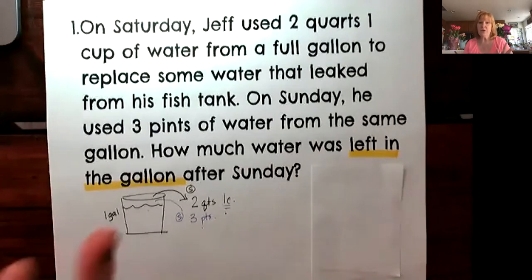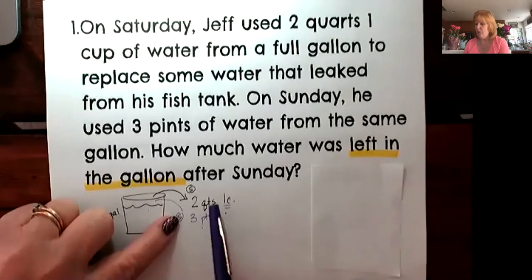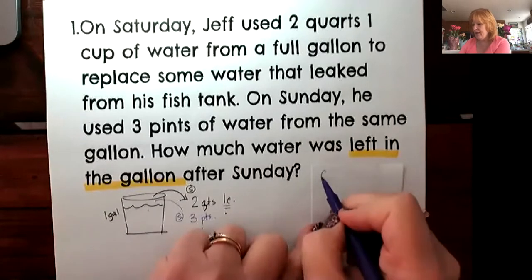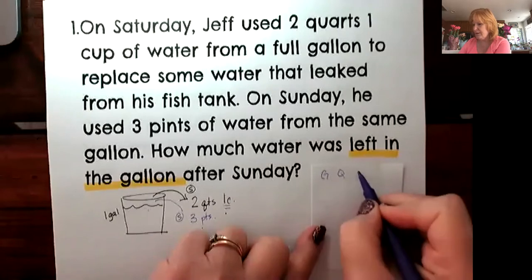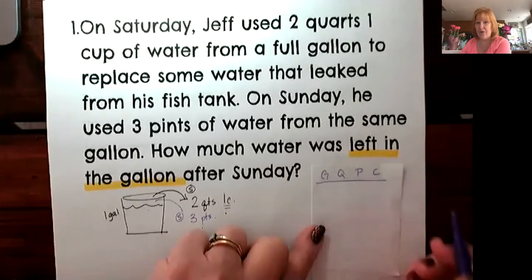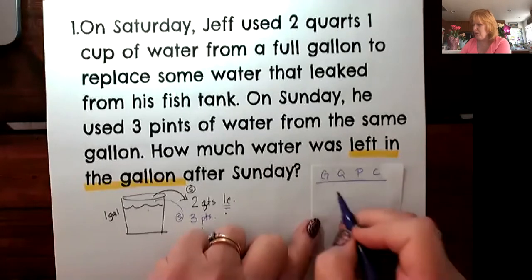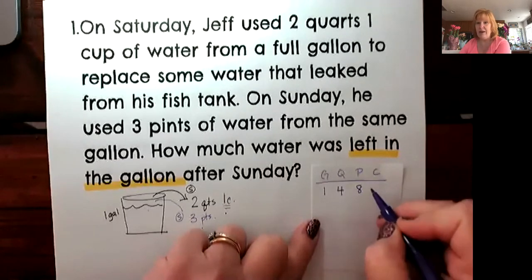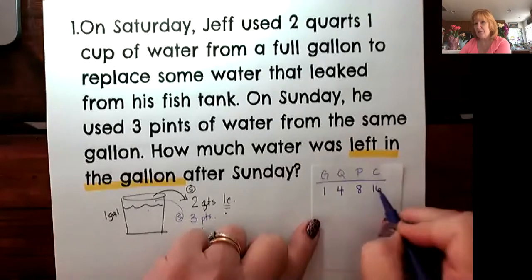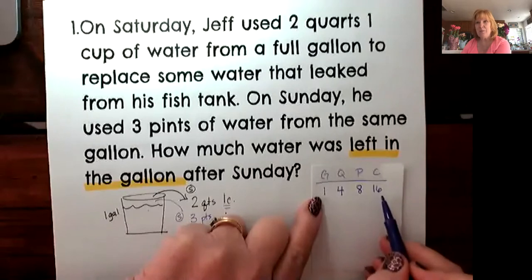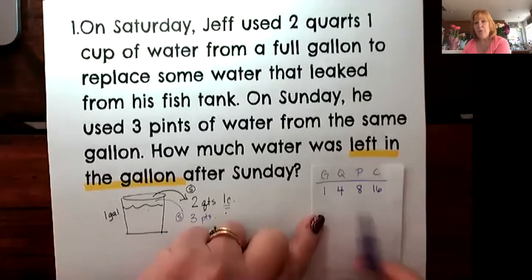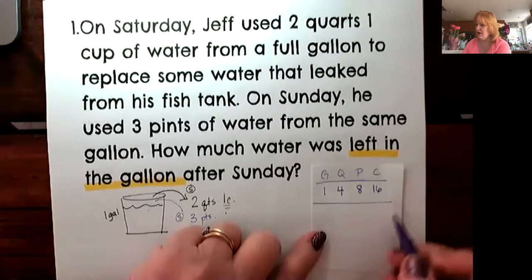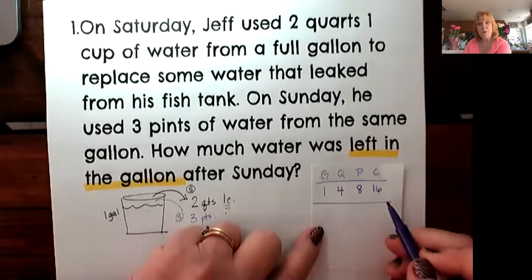Before I can figure out any subtraction, I need to find out how much was taken out. I can't do that with quarts, pints, and cups because they aren't equal units. If you remember: gallons, quarts, pints, and cups — we said 'good queens prefer chocolate.' One gallon equals four quarts, four quarts equals eight pints, and eight pints equals 16 cups. So in one gallon there are 16 cups and eight pints. We can also use multiplication: one quart equals two pints, and one pint equals two cups.